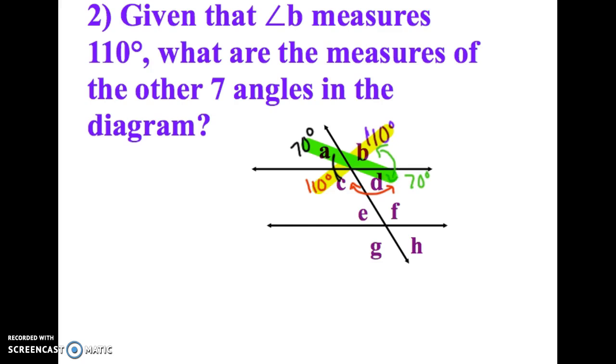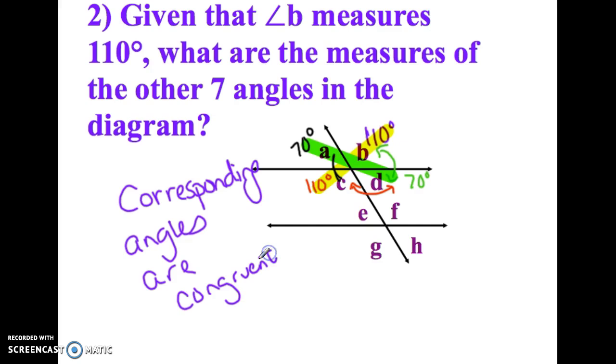I don't think I mentioned it before, but it's also very important to note that if the lines are parallel, then corresponding angles are also congruent. So the angle that corresponds to A is E. That has to be 70 degrees. It's the same measurement.